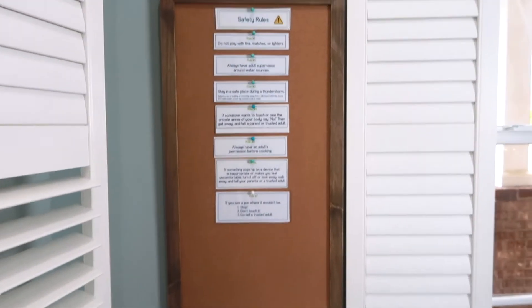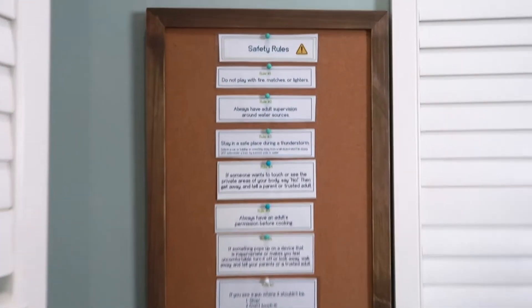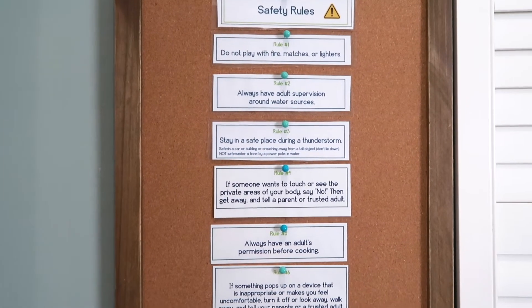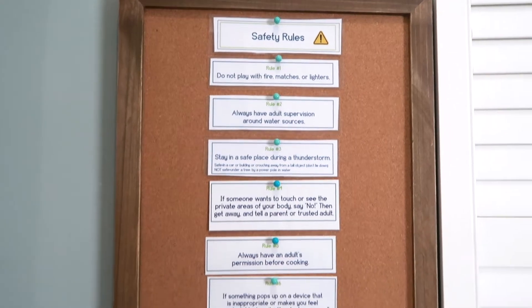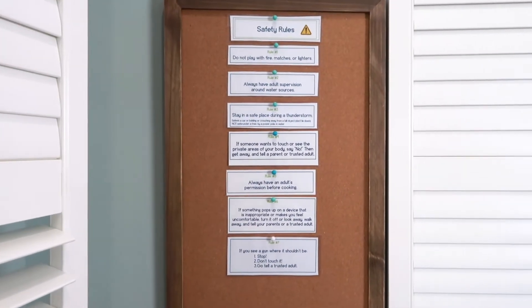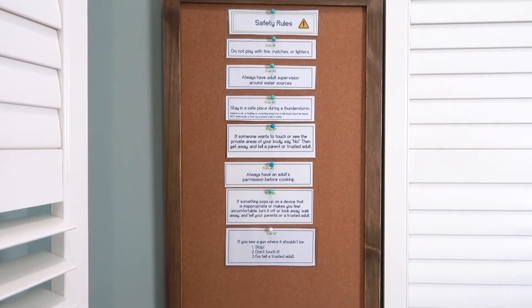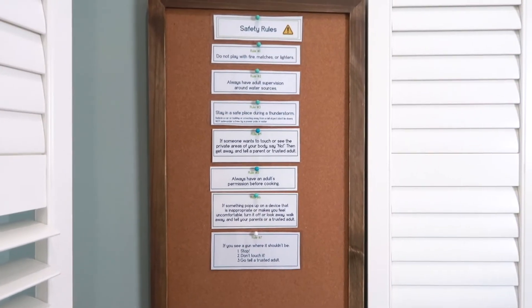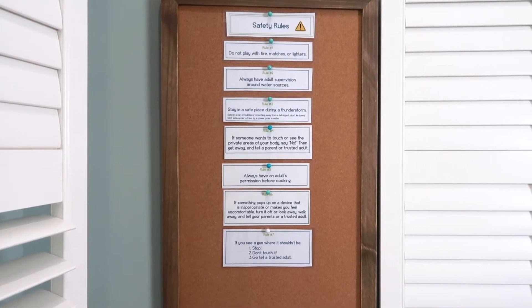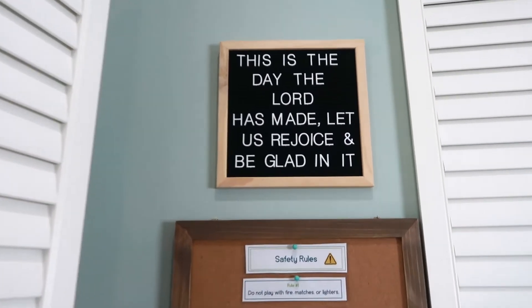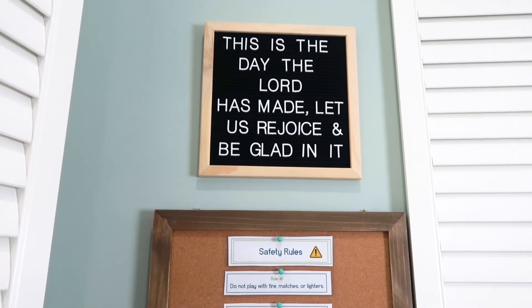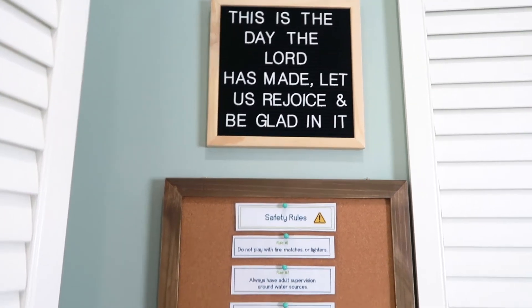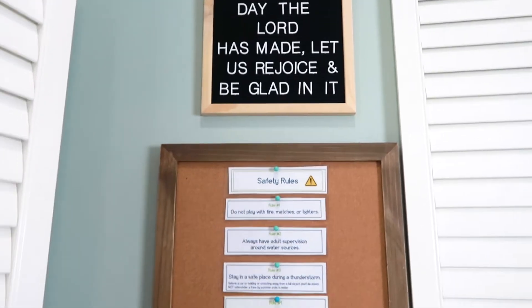Another thing we've done is added a bulletin board over here so we can put our science vocabulary on here. We're doing the Good and the Beautiful safety unit right now and this gave me a place to put our word wall because we really didn't have a place to do that. At our other house I would put these on our sliding glass door but I really didn't want to do that here. I also got from Hobby Lobby one of those little word things, so we have a verse up here: 'This is the day the Lord has made, let us rejoice and be glad in it.' We can change the letters on that whenever we want to.